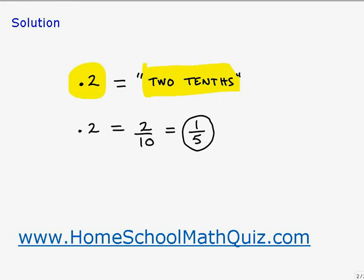So point two, you can say this decimal point two, you can say it's two tenths. And if you think about what this phrase is saying, two tenths, it's saying two parts out of ten wholes. Two tenths is indeed our fraction, so two is going to be our numerator and ten is going to be our denominator.